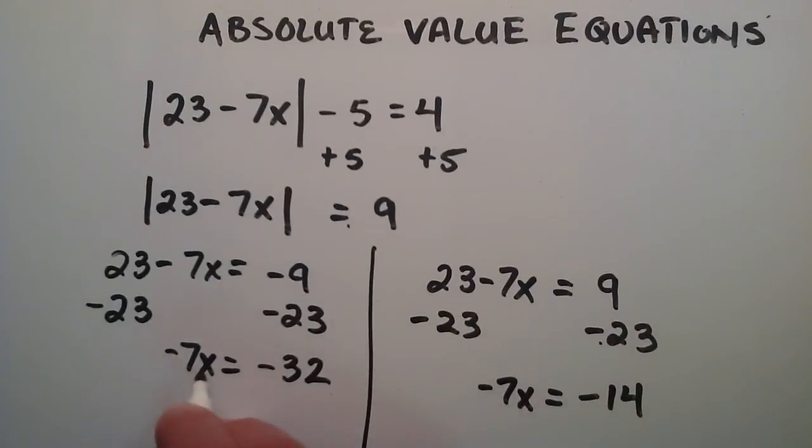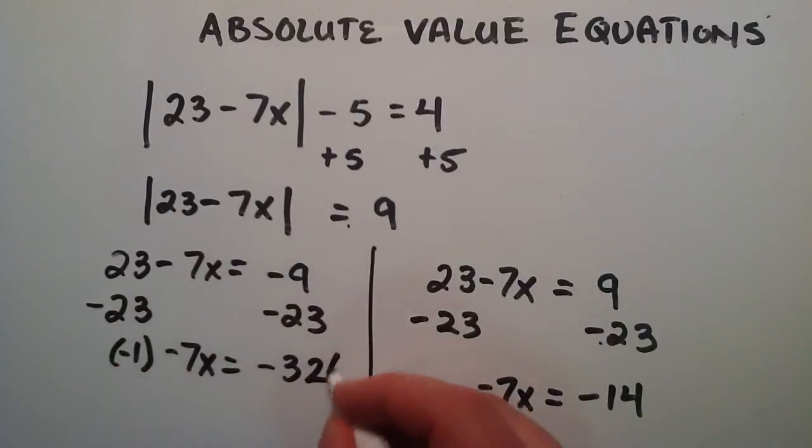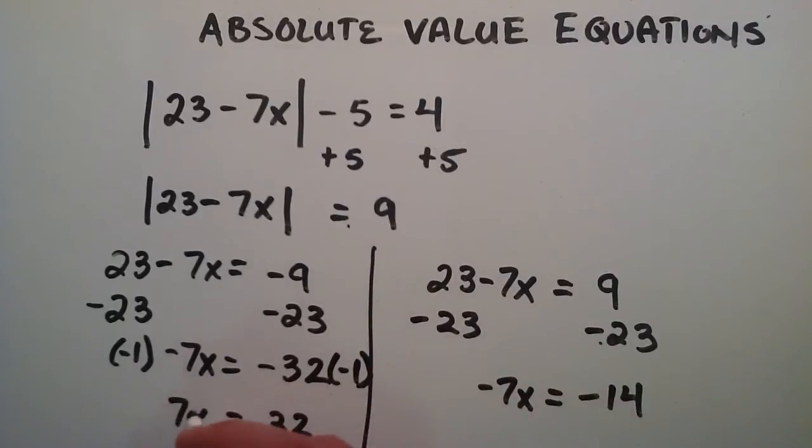And so we have negative 7x equals negative 32. And we can just simply multiply the left and right hand side by a negative 1. So a negative times a negative is a positive, and 1 times anything is itself. So this just simply becomes 32 is equal to 7x. Since we're doing a negative 1 times this, negative negative is positive, 1 times 7 is 7.